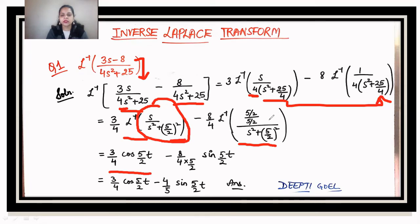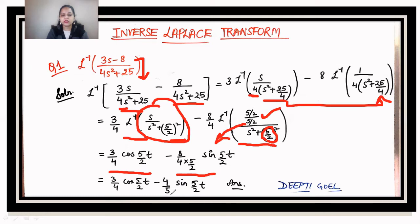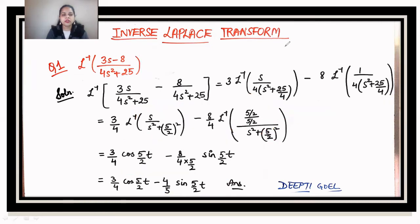For the second term, since there is no s in the numerator, we multiply and divide by a = 5/2 inside the Laplace inverse bracket and take 5/2 outside. The result is (2·2)/5 = 4/5 times the sine function, giving (4/5)·sin(5t/2). So the final answer is (3/4)·cos(5t/2) minus (4/5)·sin(5t/2).